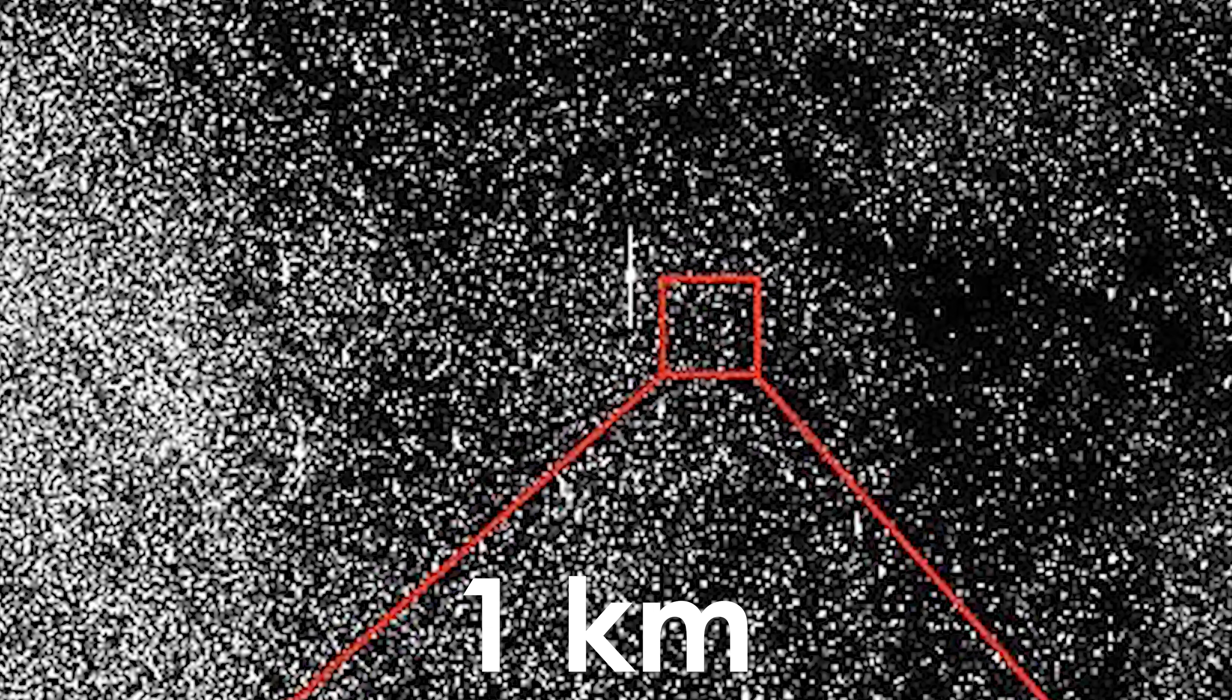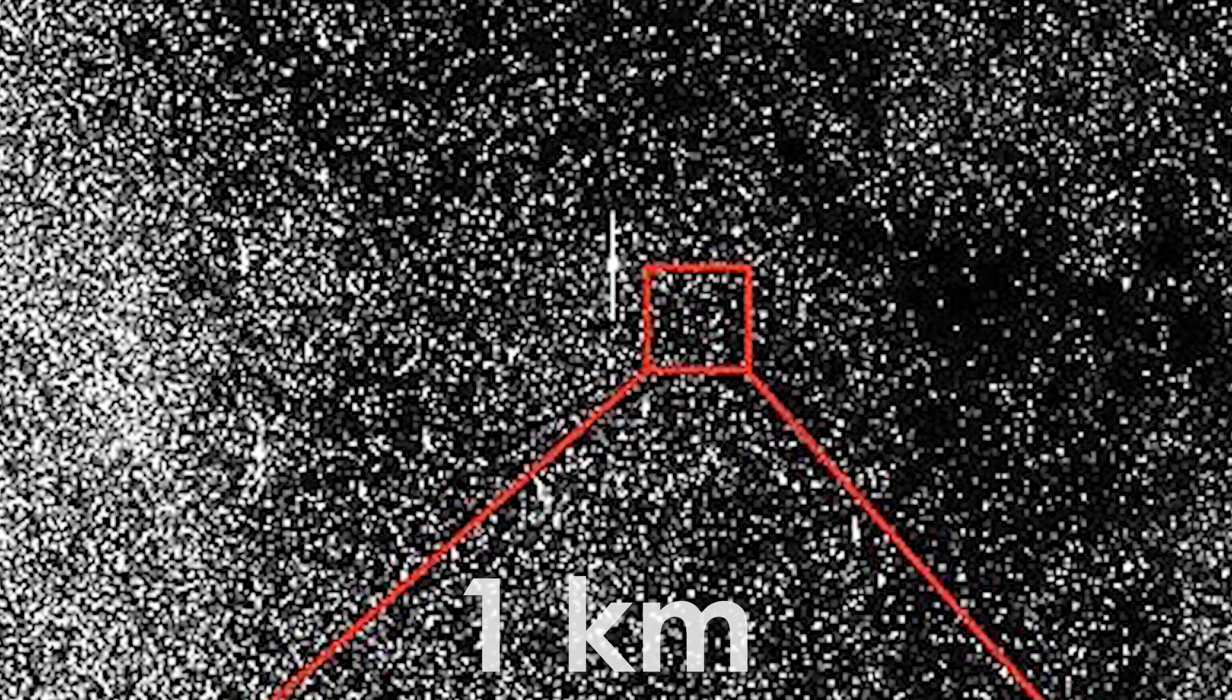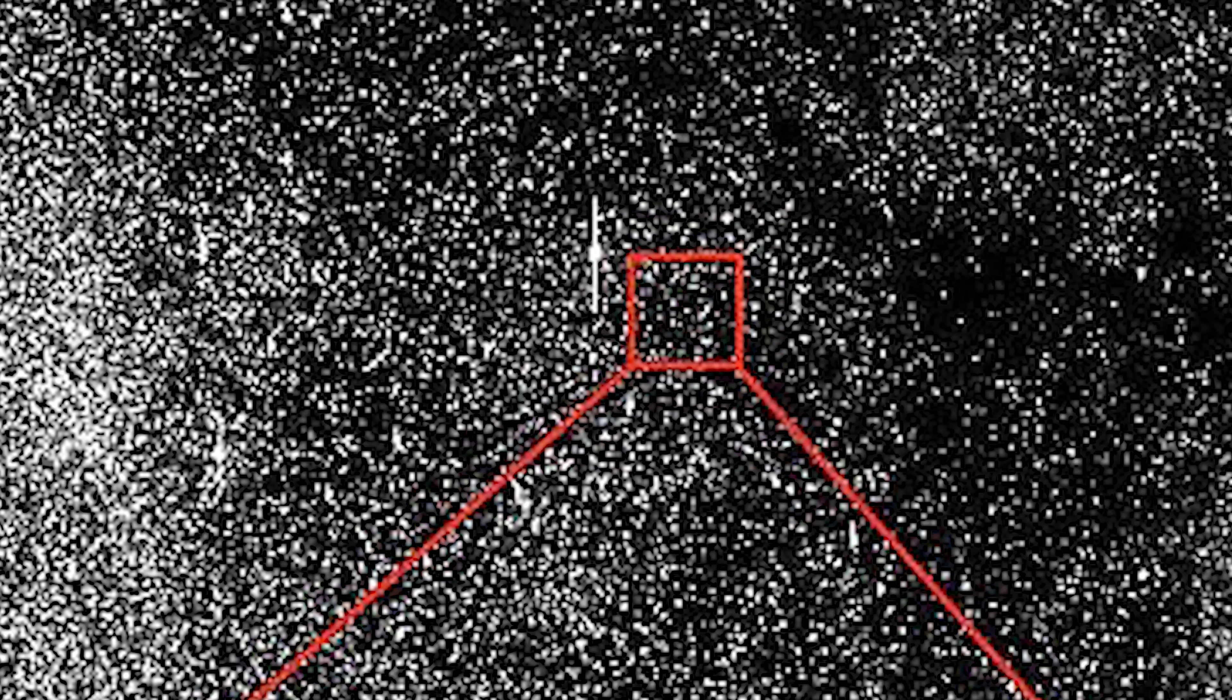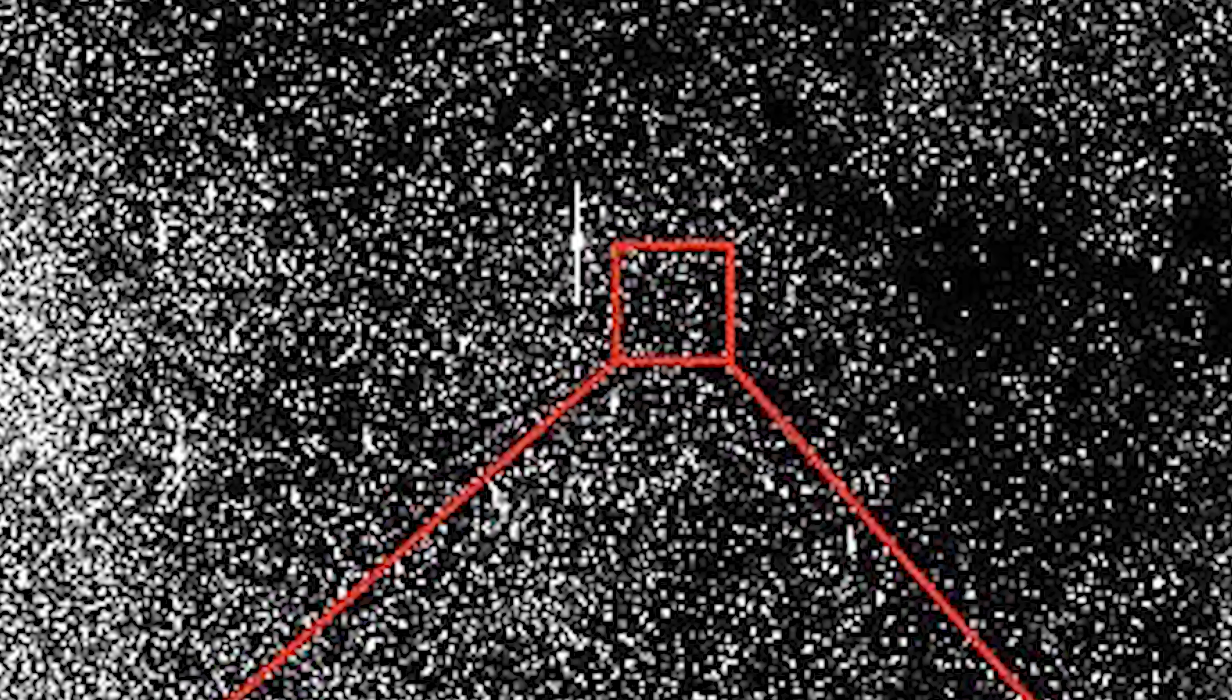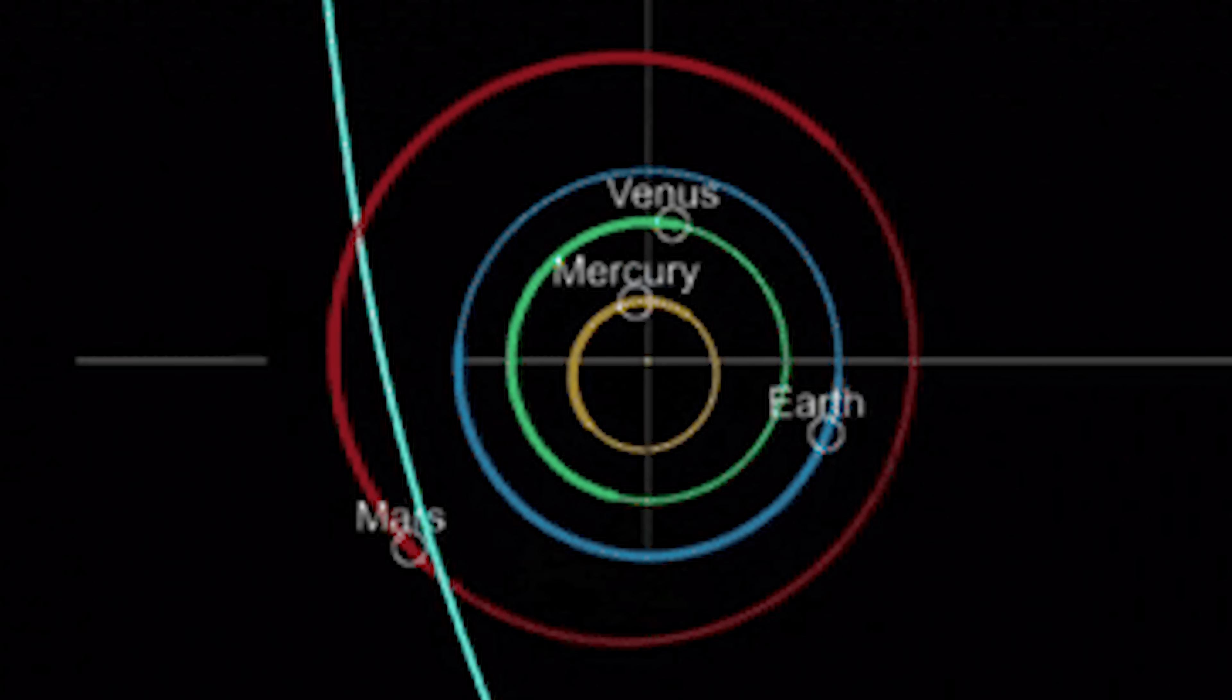As it approaches the sun, the object will continue to develop its distinctive dust cloud and tail, driven by the sublimation of surface ice.